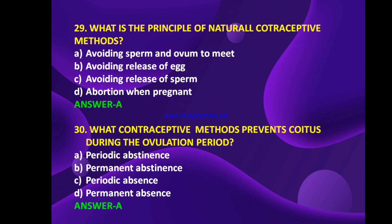One last question: what contraceptive method prevents coitus during the ovulation period — periodic abstinence, permanent abstinence, periodic absence, or permanent absence? The answer is A — periodic abstinence. One natural method of contraception called periodic abstinence is used to prevent coitus during the 10th to 17th day of the menstrual cycle, avoiding the presence of sperm in the oviduct during the release of an egg.